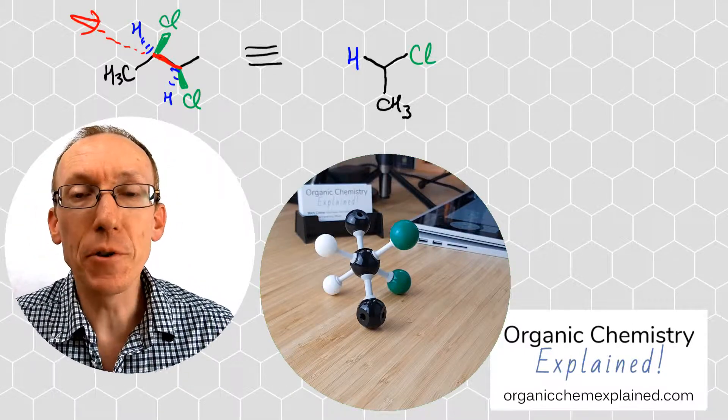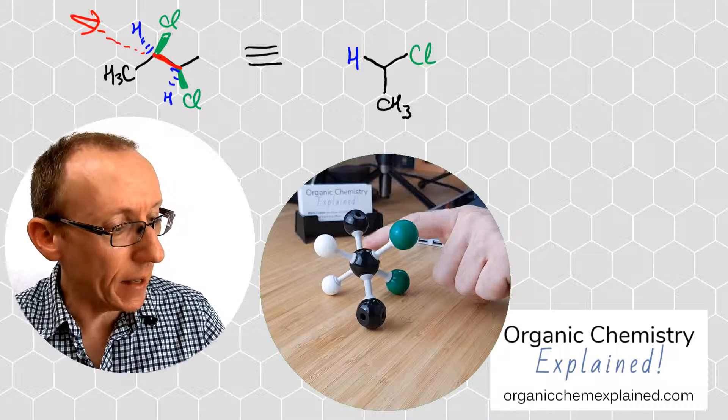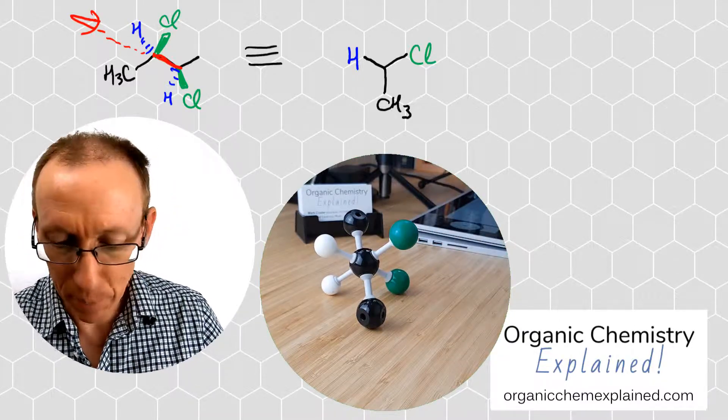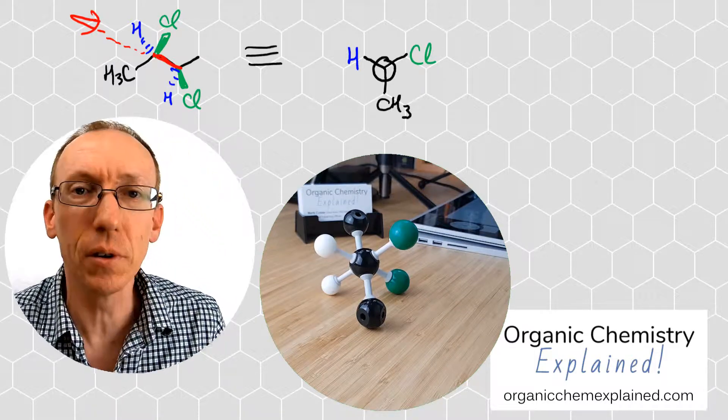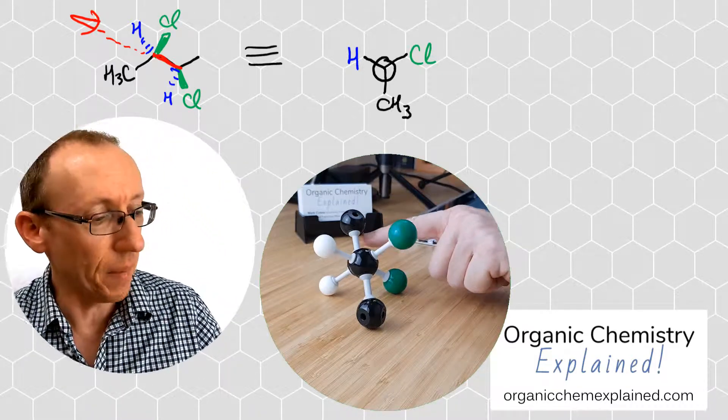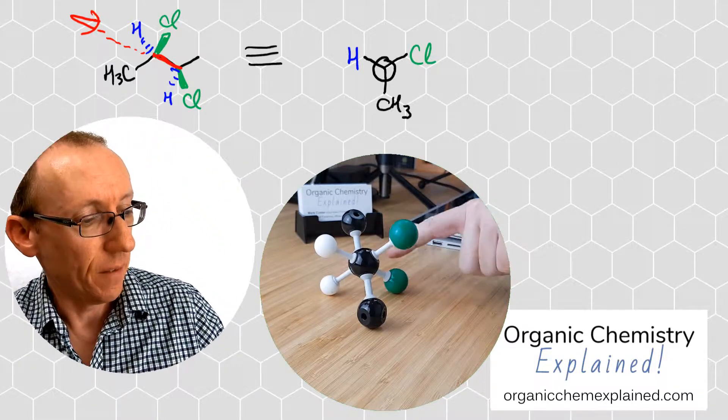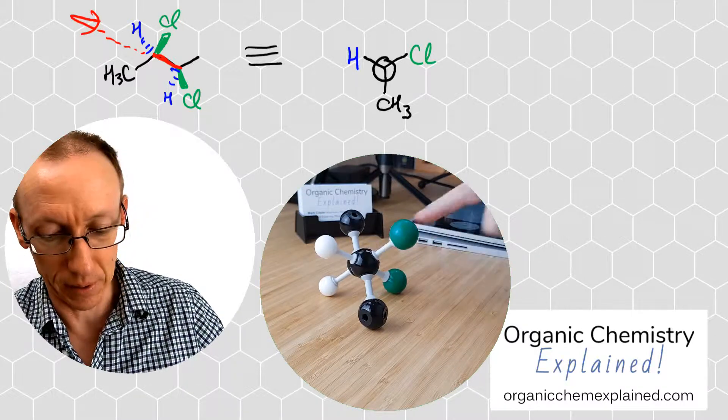For a Newman projection the rule is the back carbon atom here is represented by a circle and the circle is not as big as the bonds that we've just drawn. Out of that circle come the bonds to that set of three substituents that are attached to it.